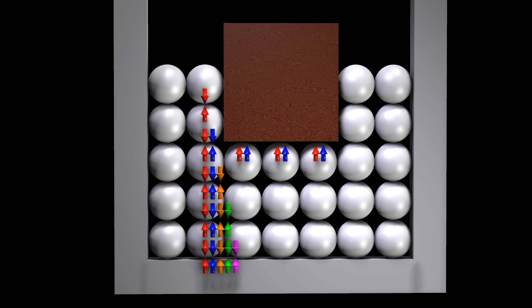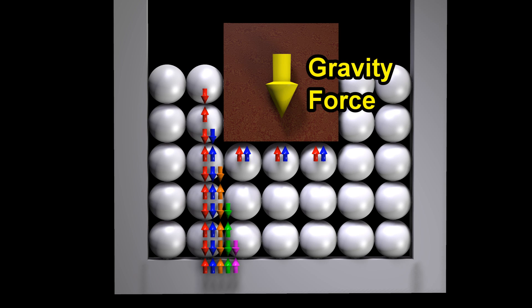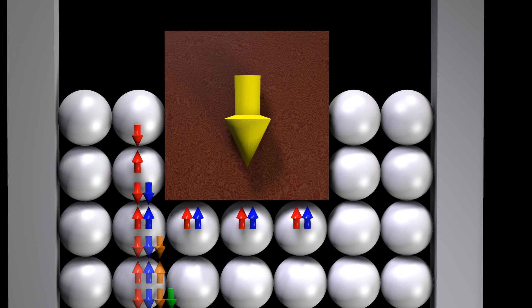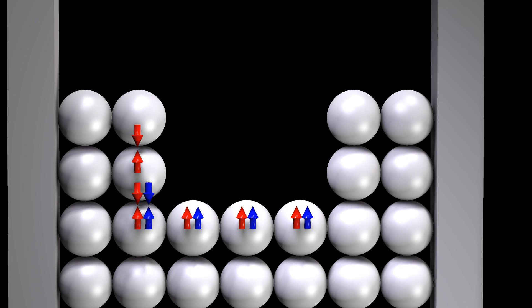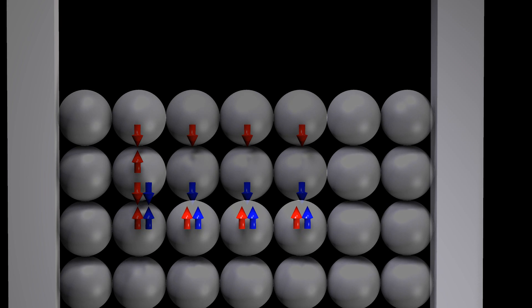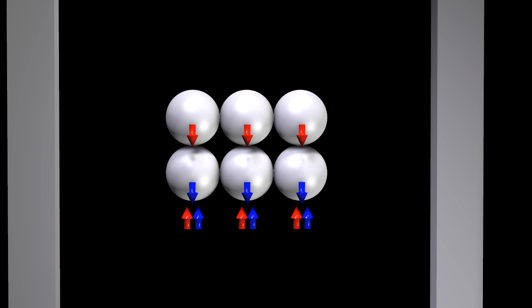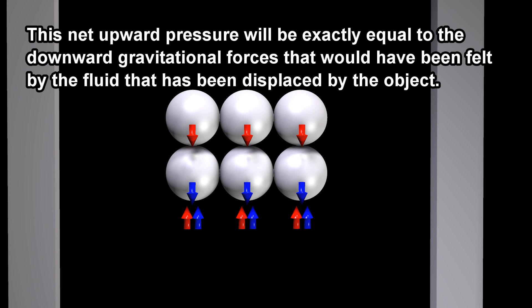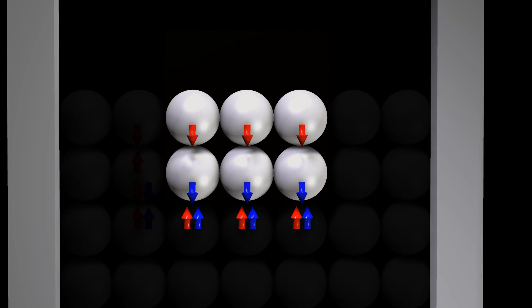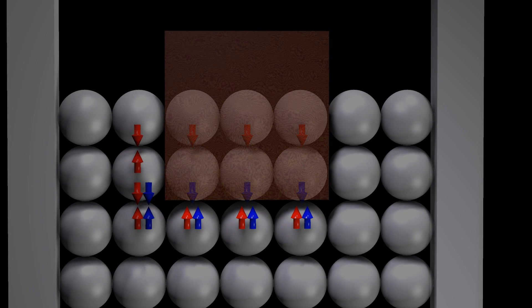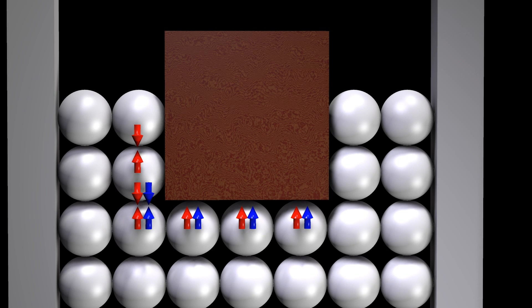A partially submerged object will feel a net upward pressure. In equilibrium, this net upward pressure will balance the downward gravitational force on the object. This net upward pressure will be exactly equal to the downward gravitational forces that would have been felt by the fluid that has been displaced by the object. And this is precisely what Archimedes' Principle states.